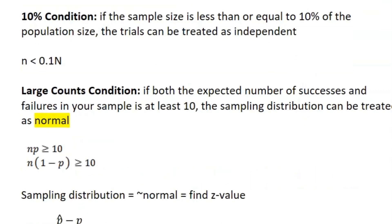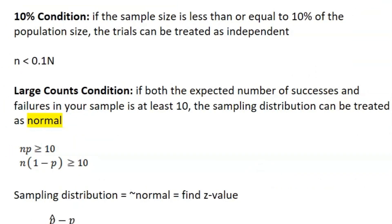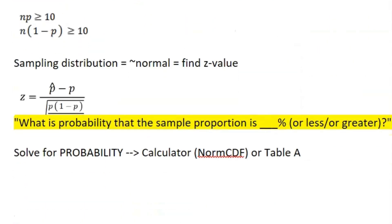Then the last one is the large counts condition. Basically, the number of successes and failures both have to be equal to or above 10. That is where you have the size of your sample n times the proportion, and n times 1 minus p, which represents the number of failures you have.